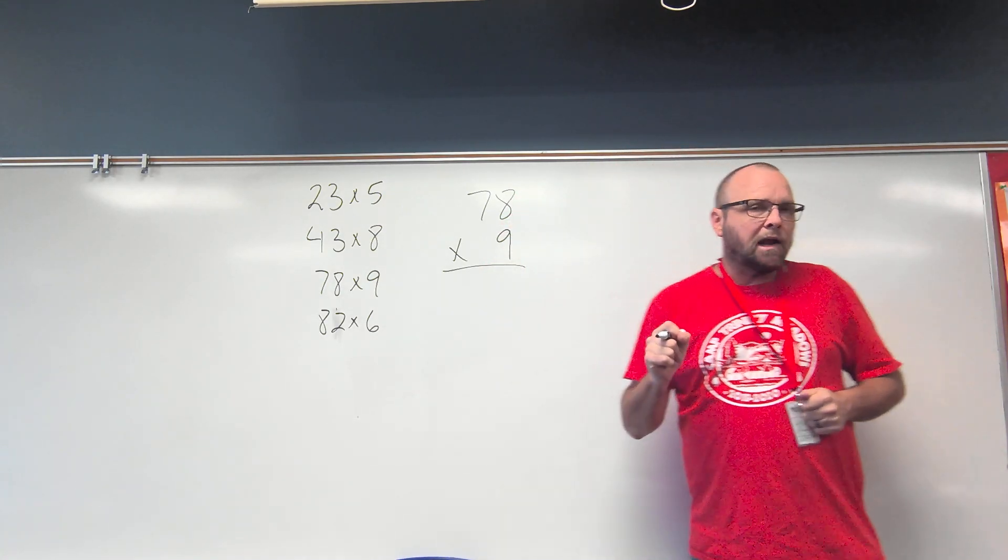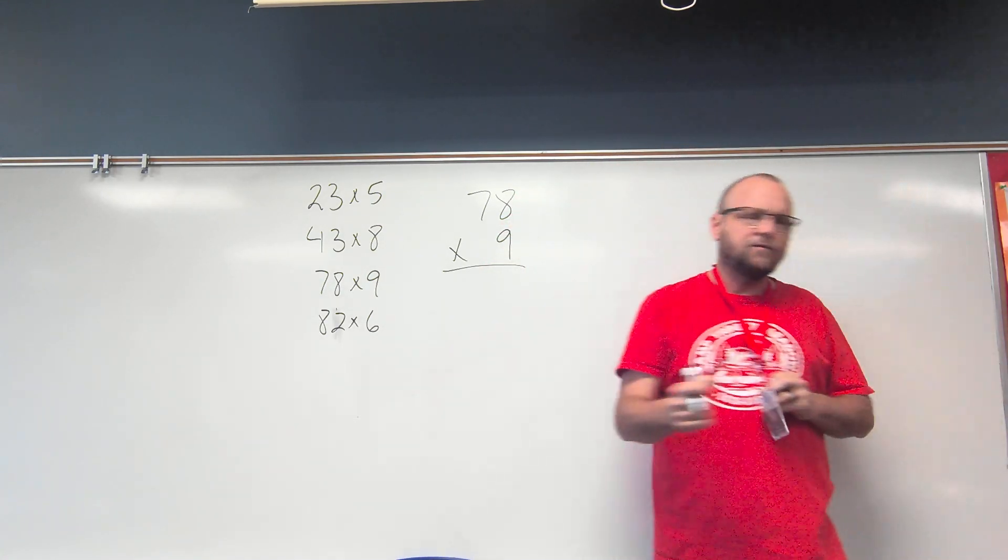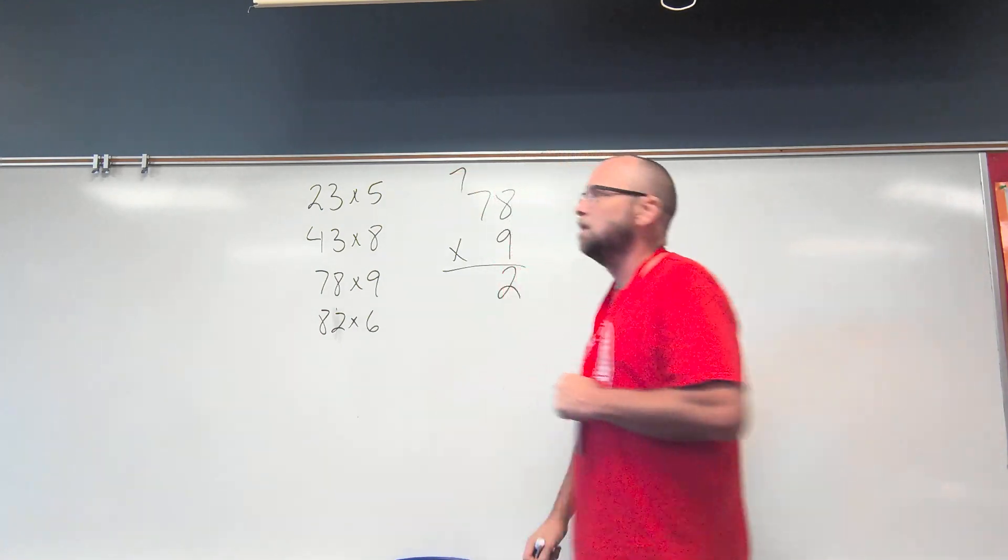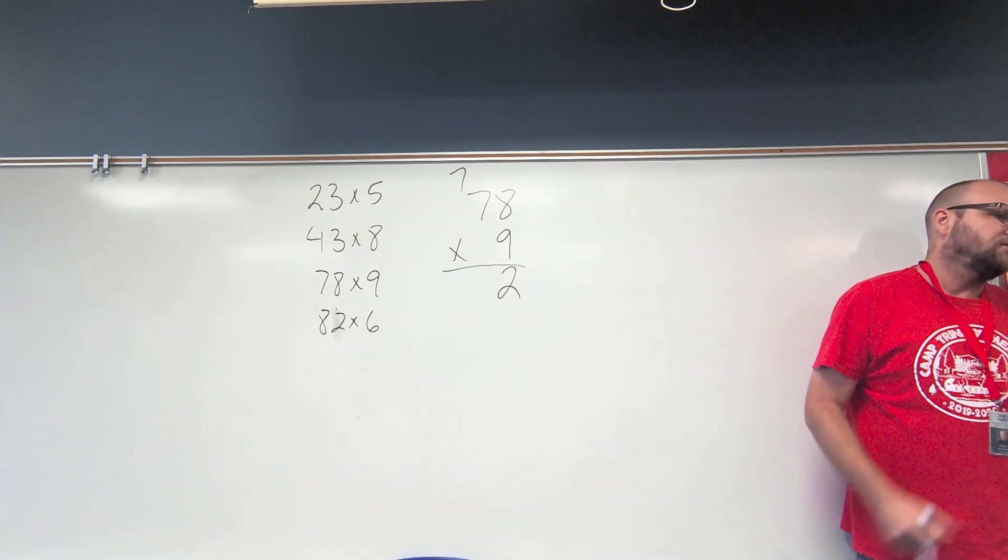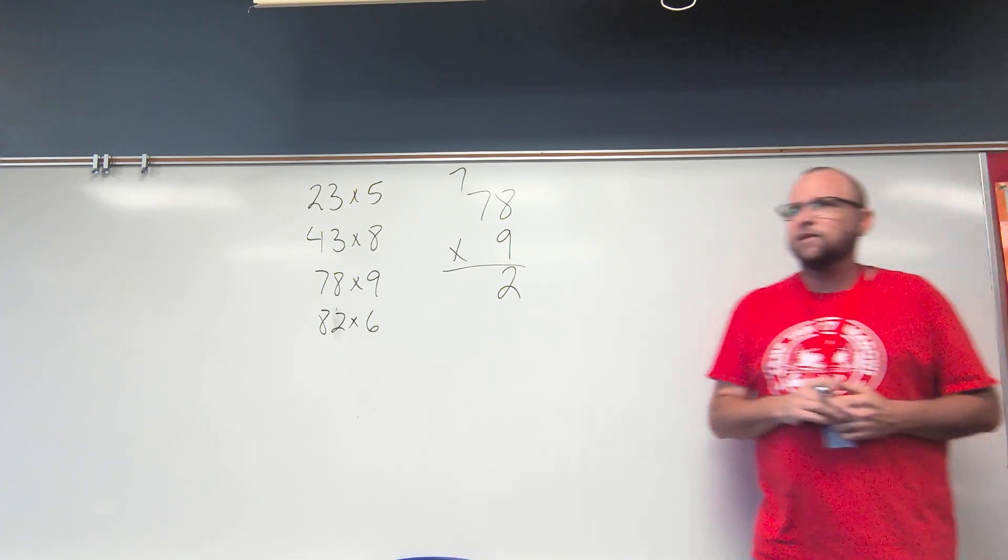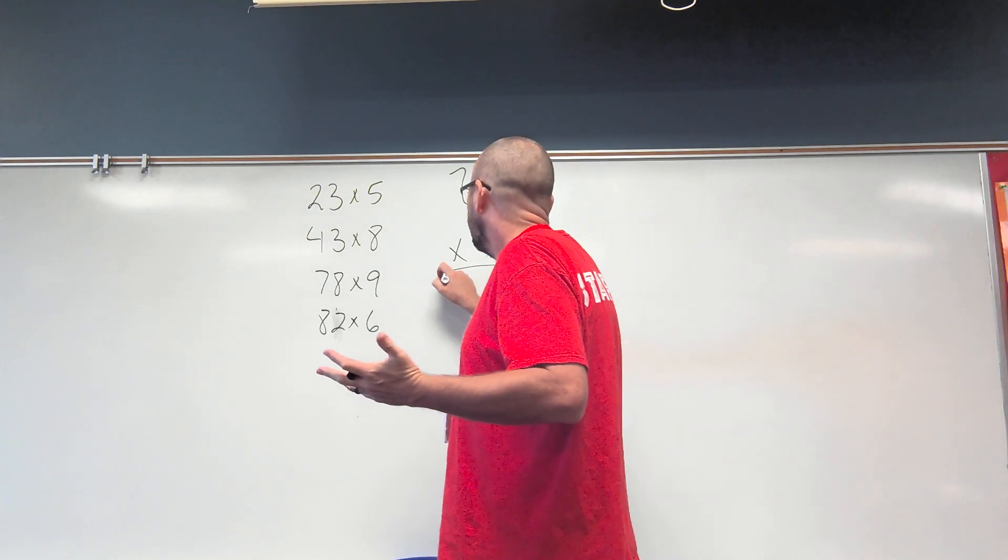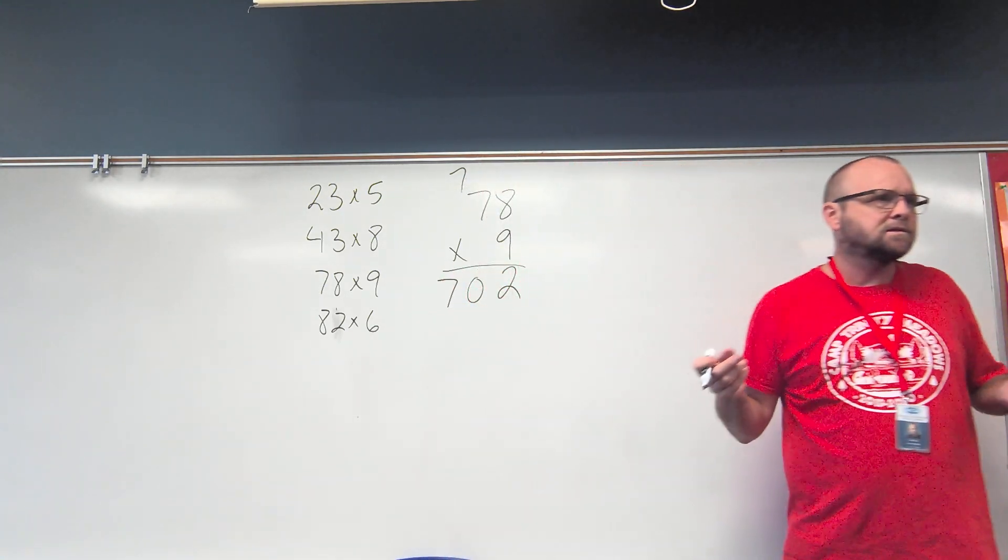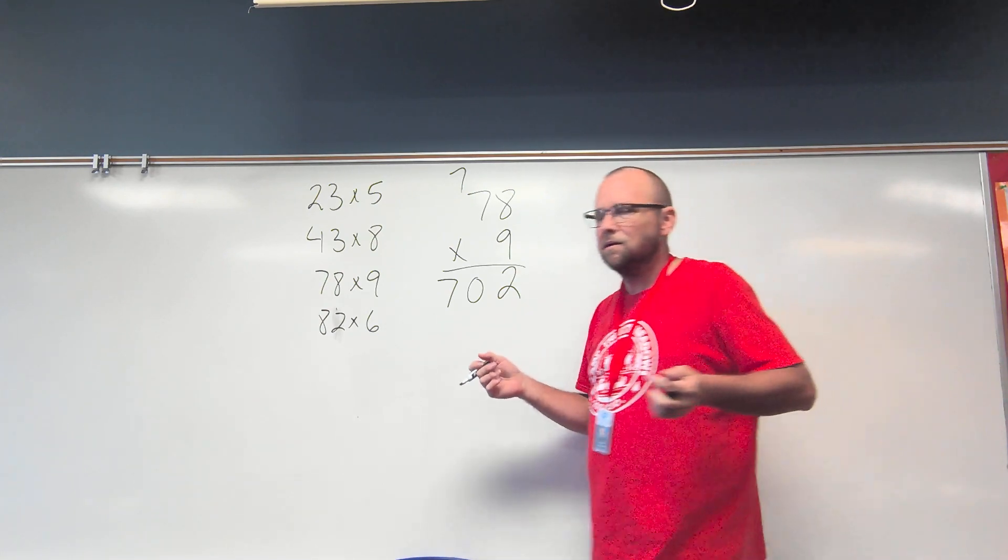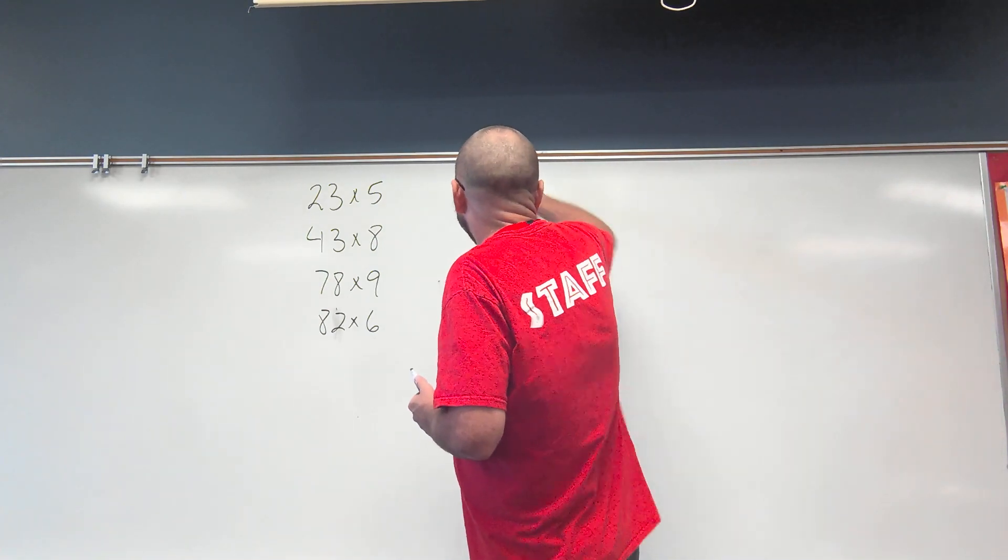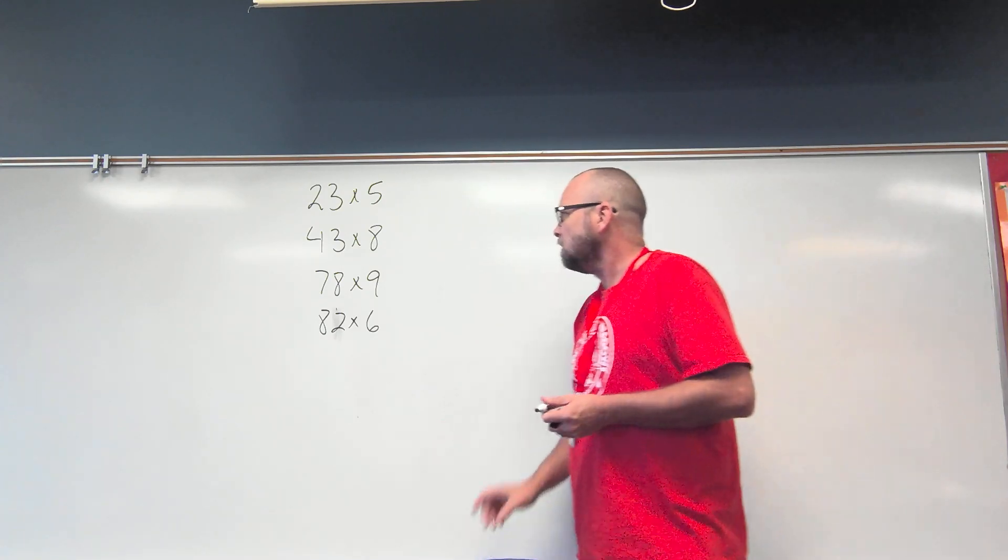And 78 multiplied by 9. 9 times 8 is? 72. 72 ones, or two ones and seven tens. 9 times 7 is? 63. Plus seven more? 70. So I have 70 tens, or seven hundreds and zero tens. I don't care around 70 tens. That's crazy.